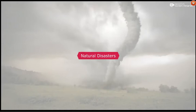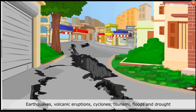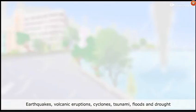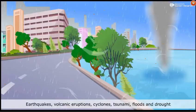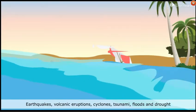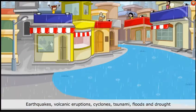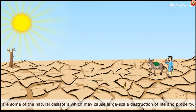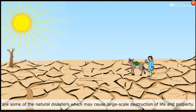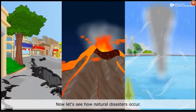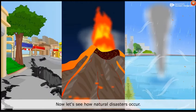Natural disasters — earthquakes, volcanic eruptions, cyclones, tsunami, floods and drought — are some of the natural disasters which may cause large-scale destruction of life and property. Now let's see how natural disasters occur.